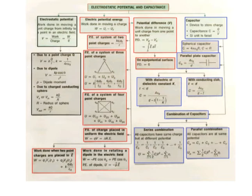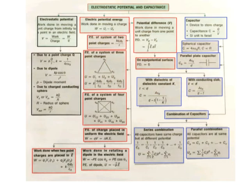Potential energy of a system of four point charges: U equals U12 plus U23 plus U34 plus U41 plus U13 plus U24. Potential energy of a charge placed in a uniform electric field: W equals qV equals delta KE — work done equals change in kinetic energy. Work done when two point charges are placed in an electric field: W equals q1·V1(r1) plus q2·V2(r2) plus k·q1·q2/r12. Work done in rotating a dipole in an electric field: W equals minus p·E·cos(theta2) plus p·E·cos(theta1). Potential energy of a dipole: U equals minus p vector dot E vector.